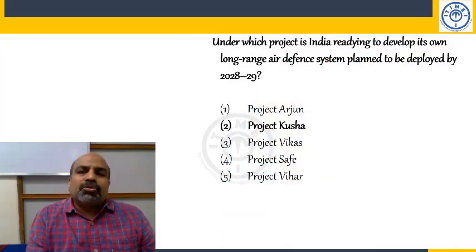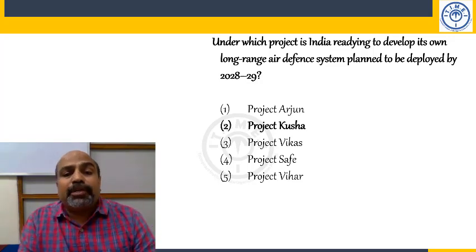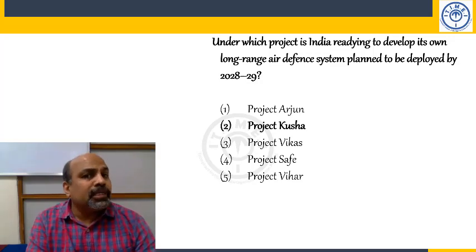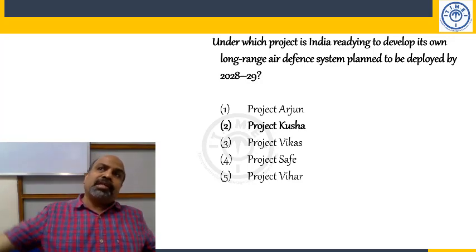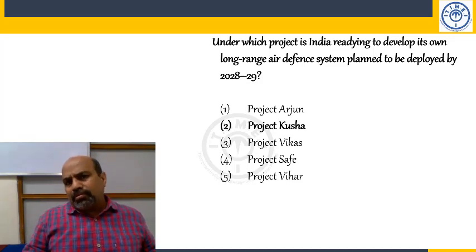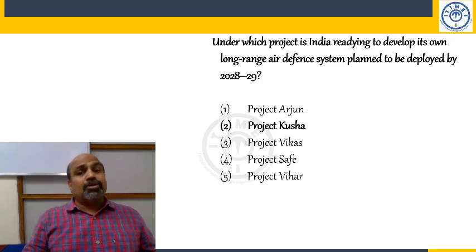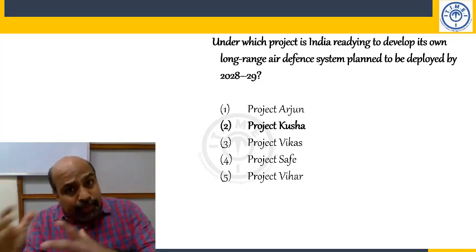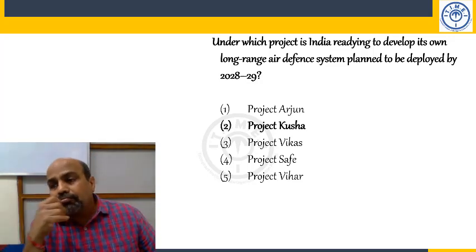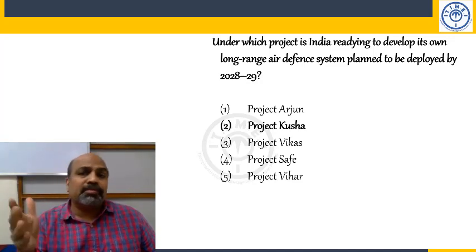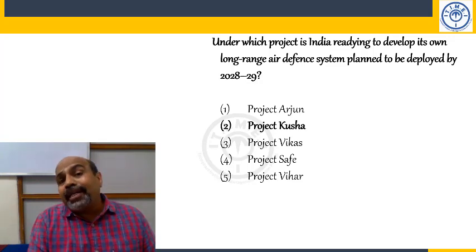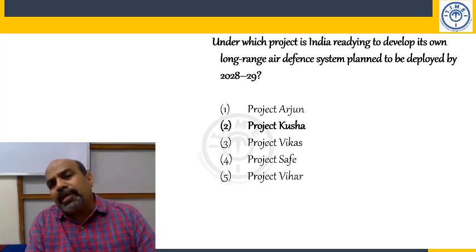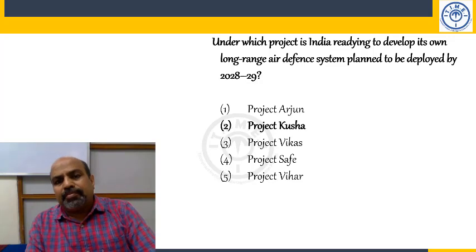India is developing its own long-range air defense system under Project KUSHA, planned to be deployed by 2028-29. This is an LR-SAM — Long Range Surface to Air Missile system — a mobile platform that can intercept incoming missiles at ranges of 150, 250, and 350 kilometers. India already has Akash and Trishul SAM missiles, and Prithvi surface-to-surface missiles. This is comparable to Israel's Iron Dome or Russia's S-400 Triumf system.